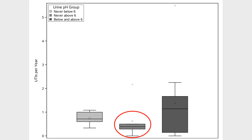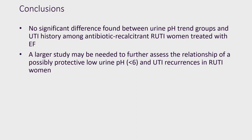The non-significant difference between low and high pH groups may also indicate the success of electrofulguration at preventing UTIs, as it is possible that electrofulguration decreases the number of UTIs to an amount such that the difference from pH groups is negligible.